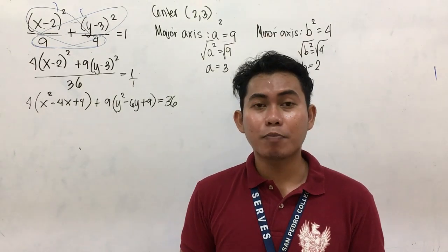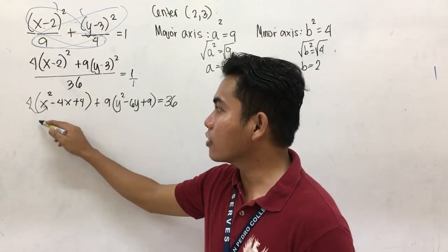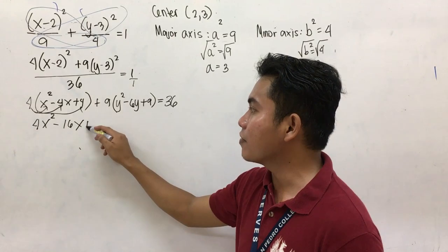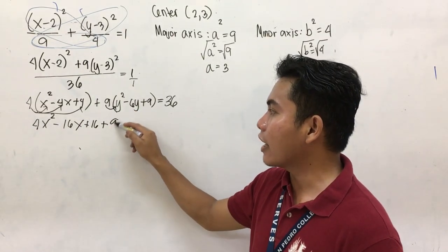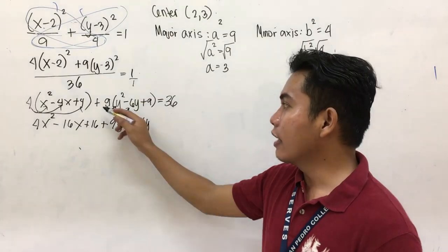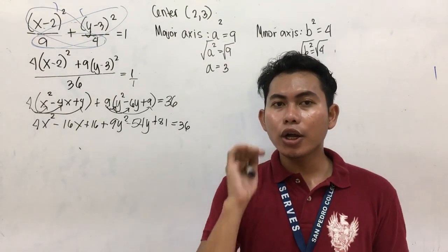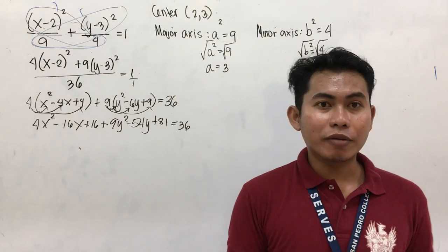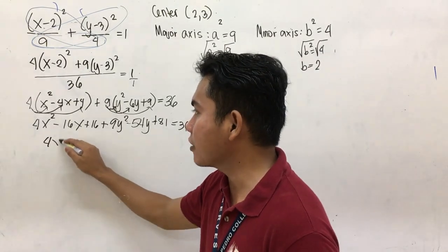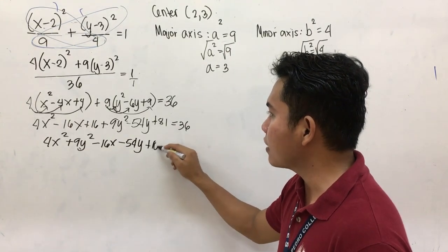After this process, distribute. 4 times x squared is 4x squared; 4 times negative 4x is negative 16x; 4 times 4 is positive 16. Plus 9 times y squared is 9y squared; 9 times negative 6y is negative 54y; 9 times 9 is 81. Equal to 36. Then you are going to combine like terms and follow the general equation of our ellipse. So you have 4x squared plus 9y squared minus 16x minus 54y plus 16 plus 81.